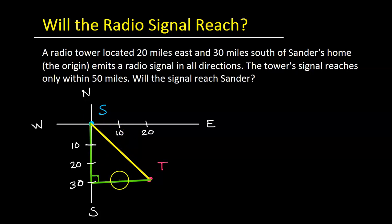It's easy to form a right triangle where the distance from Sander's to the tower is the hypotenuse of this right triangle. The one side of the right triangle has a length of 20. So this is a length of 20 right here because 20 to the east. And the other side has a length of 30 because 30 miles south.